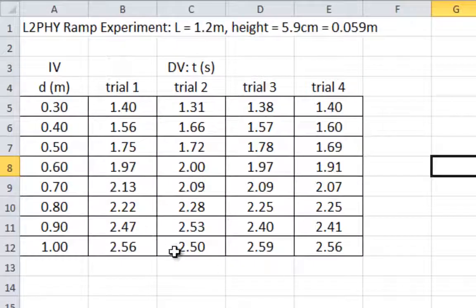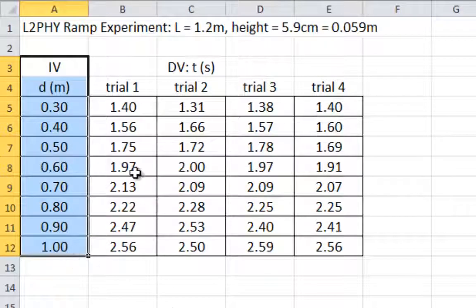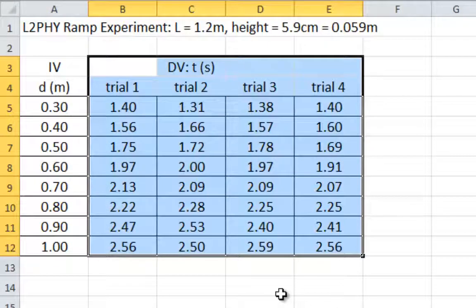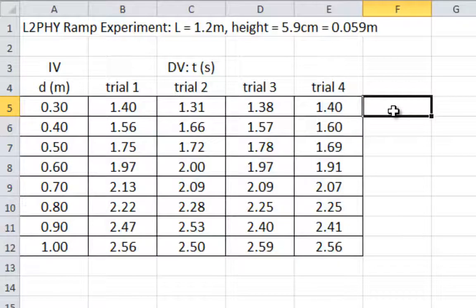Your data should look something like this, where you have the distances the marble traveled and the time for each of your trials.